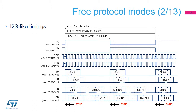In an I2S-like protocol, each edge of the frame synchronization, or FS, is used to align the slot positions. The frame length, the duty cycle, and polarity can be adjusted. The clock data strobe edge can be selected as well. The position of the slots with respect to the frame edges can be selected. The size of the slots can also be adjusted. There must be an even number of slots per frame in I2S-like protocols.